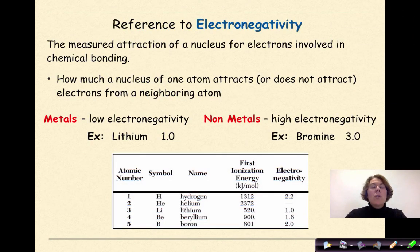This is a reference to electronegativity, which is found on Table S of your reference table. Electronegativity is the measured attraction of a nucleus for electrons involved in chemical bonding, specifically our valence electrons. How much a nucleus of one atom attracts or does not attract electrons from a neighboring atom.